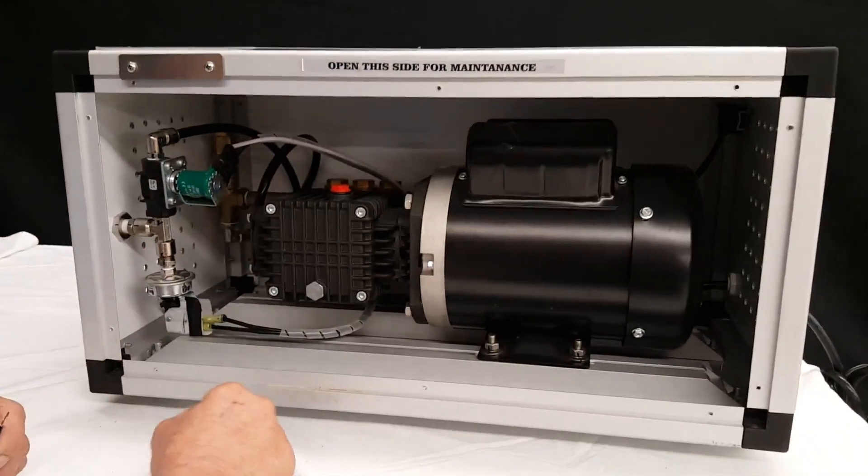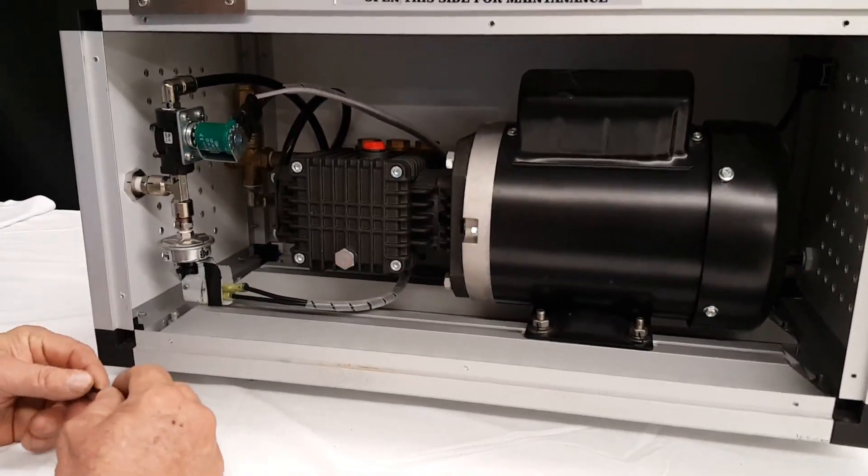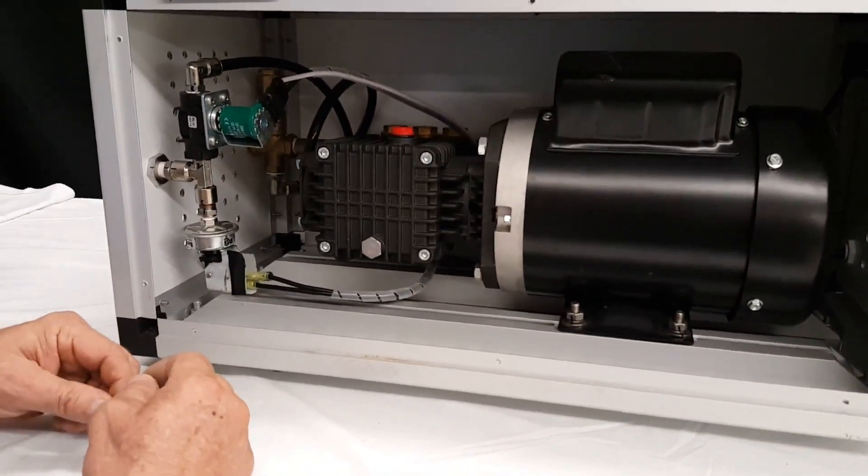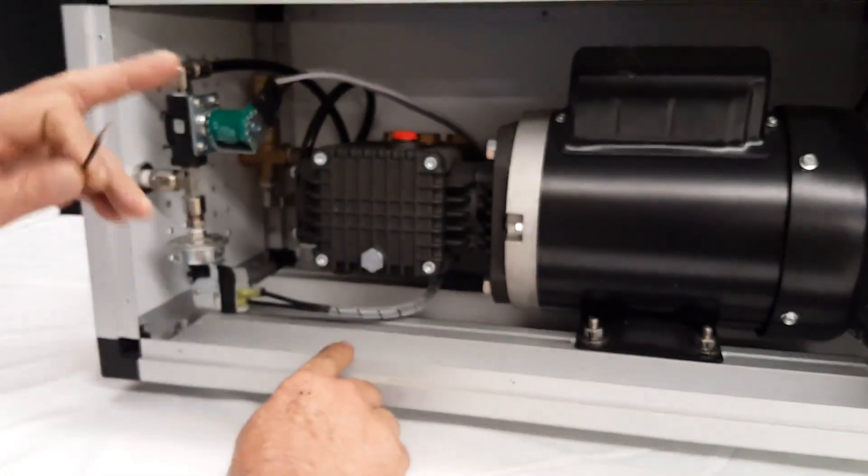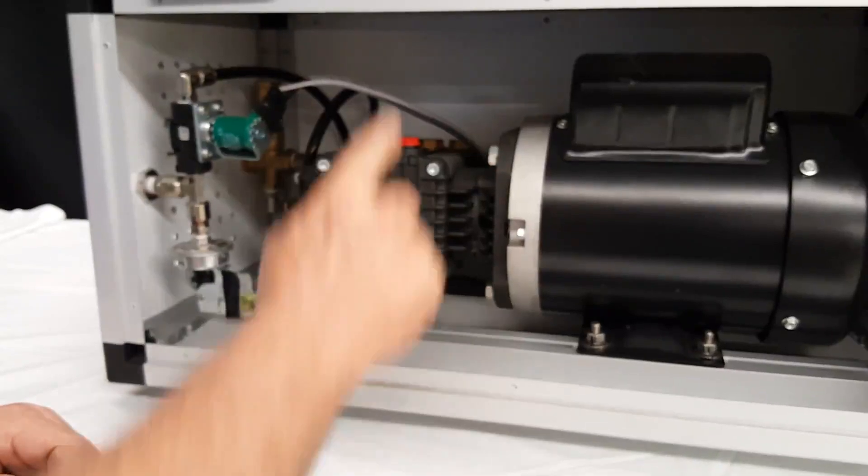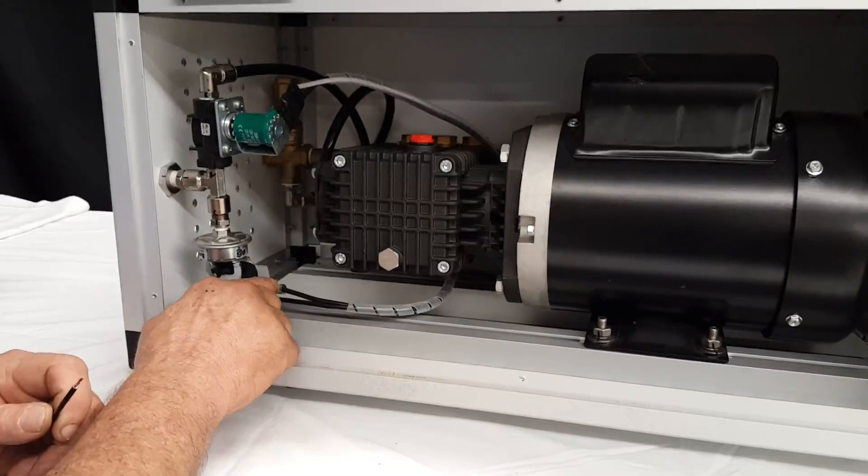Unplug your pump so you have no chance of getting electrical shock. Come inside here and take out the 10 screws that hold this panel on. It says open this side for maintenance. Take the tape off of these two wires here.